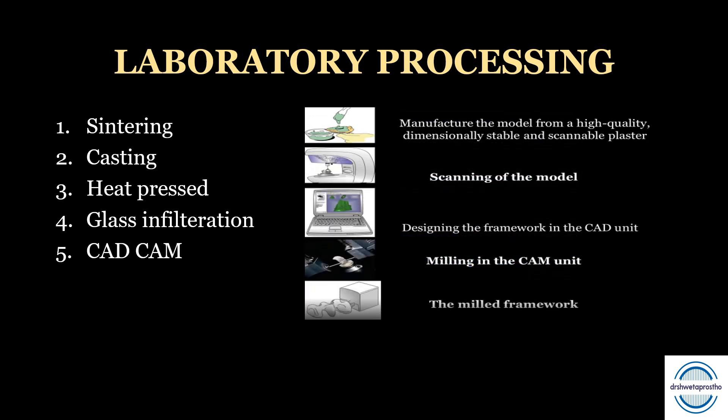The last processing method is CAD CAM — Computer Aided Design and Computer Aided Machining. First, a model is manufactured from high-quality, dimensionally stable, and scannable plaster. Then scanning of the model is done. Third, designing of the framework is done in the CAD unit. Based on this design, milling is done in the CAM unit, and thus we obtain the milled framework in the desirable shape.